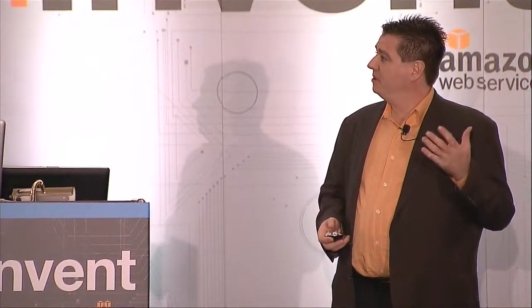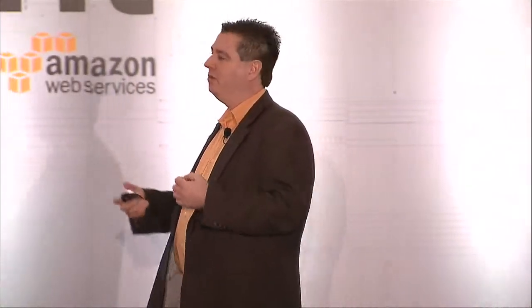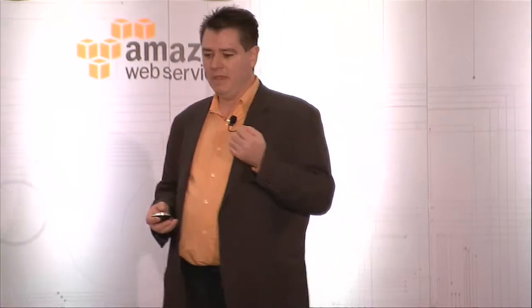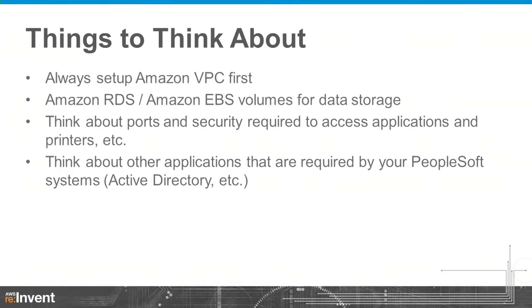Some things to think about: get your VPC up and running first. If you don't do it first, there's a lot of work involved in rebuilding and moving into VPC later. Look at Amazon RDS and EBS-optimized volumes and leverage them as much as possible. Think carefully about ports and security — everything on Amazon is secured by default with every port blocked, so you must unblock each port individually (for example, port 445 for Active Directory). Also think about the other applications that integrate with your enterprise app — most of that is relatively easy to include in the migration.